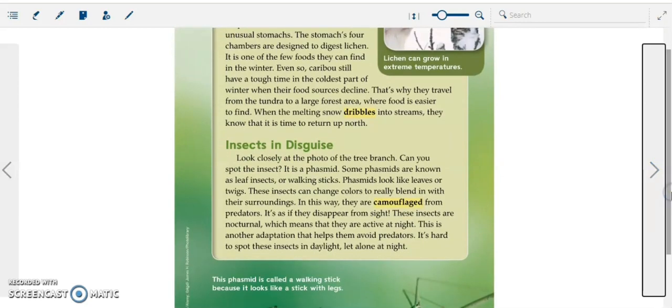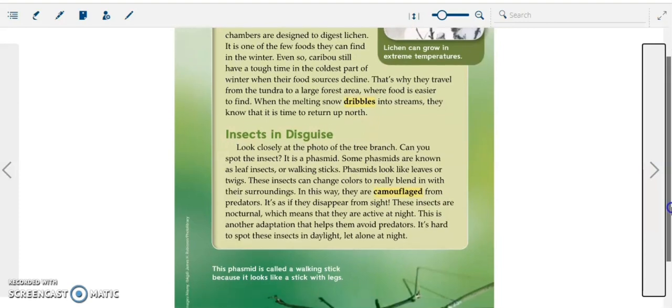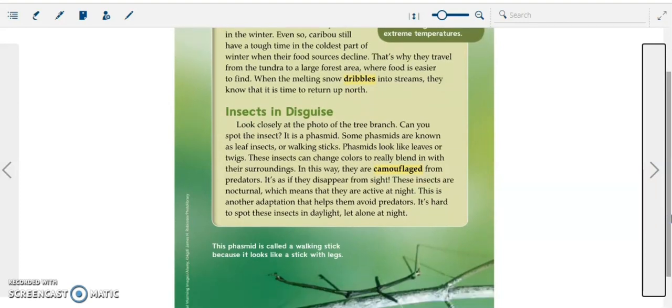Insects in disguise. Look closely at the photo of the tree branch. Can you spot the insect? It is a phasmid. Some phasmids are known as leaf insects or walking sticks. Phasmids look like leaves or twigs. These insects can change colors to really blend in with their surroundings.